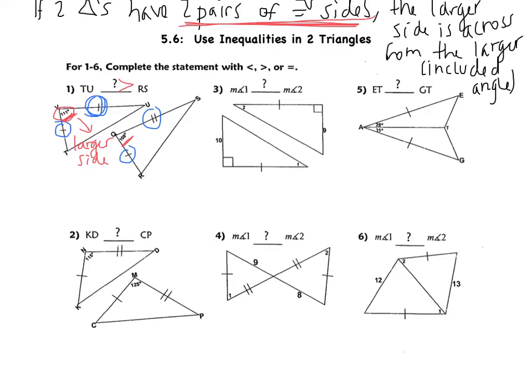So TU is going to be bigger than RS. We have to complete the statement with less than, greater than, or equal to. Looking at example three, I have one pair of sides that are congruent, and then I have a 10 and a 9. I do not have two pairs of congruent sides, so the hinge theorem does not apply.